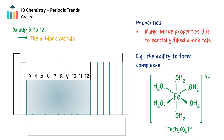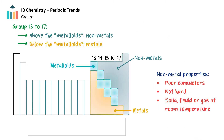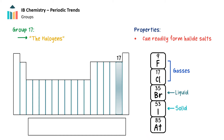Groups 3 to 12 form the d block or transition metals. These contain partially or completely filled d orbitals and therefore exhibit many unique properties. Groups 13 to 18 are mostly non-metals, though elements near the bottom of groups 13 to 16 may be metals or semi-metals, also known as metalloids. Group 17 elements all have seven valence electrons and are called the halogens. At room temperature, fluorine and chlorine are gases, bromine is a liquid, and iodine is a solid that readily sublimes. Because these elements only need one more electron to form a full octet, they react readily to form halide salts.